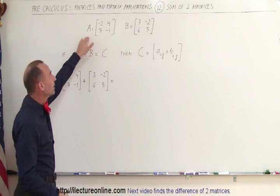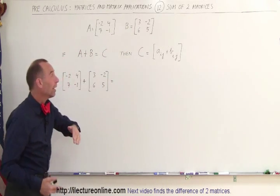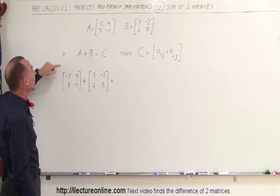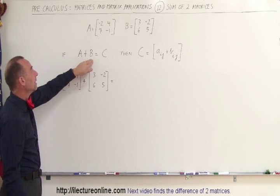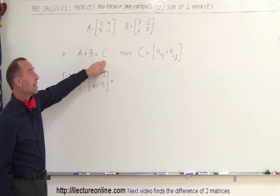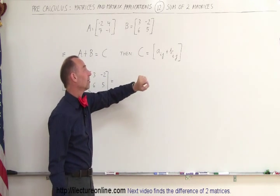Here we have matrix A, and there we have matrix B. The way it's done mathematically, the way we write that, is if A plus B, so we're adding two matrices A and B, if that is equal to the matrix C, then the matrix C will look like this.